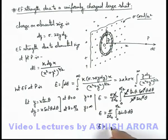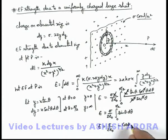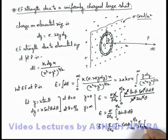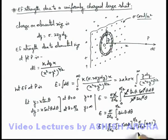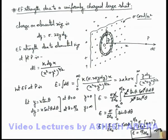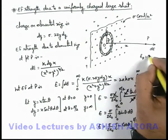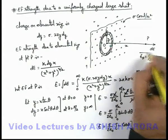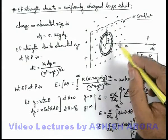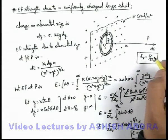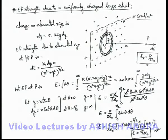Integrating, sigma/(2ε₀) times the integration of sin θ gives −cos θ, with limits from zero to π/2. Substituting the limits: −cos(π/2) + cos(0) = 0 + 1 = 1. So the result we are getting is sigma divided by 2ε₀. This is the electric field due to the sheet, which is quite an important result to keep in mind. The net electric field at point P is sigma/(2ε₀), due to a uniformly charged very large sheet with surface charge density sigma coulombs per meter square.